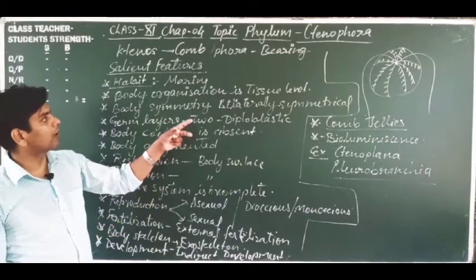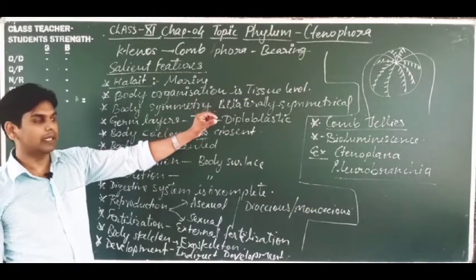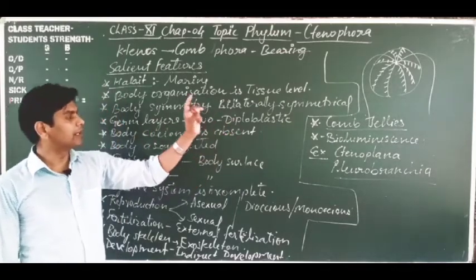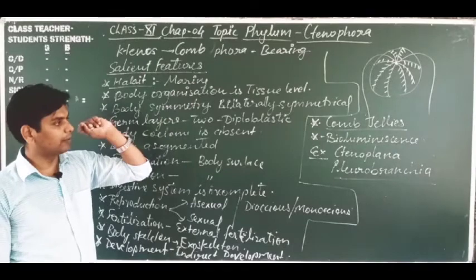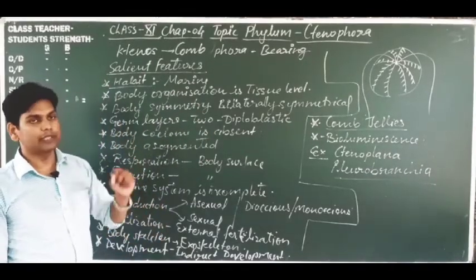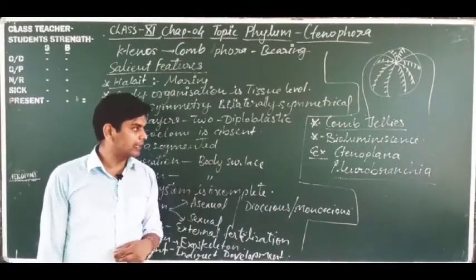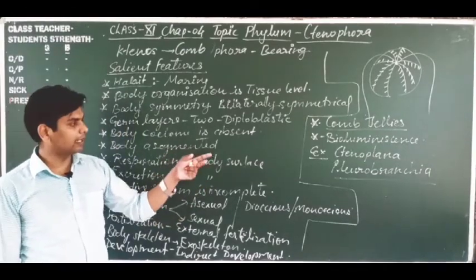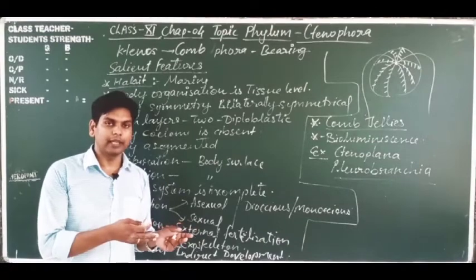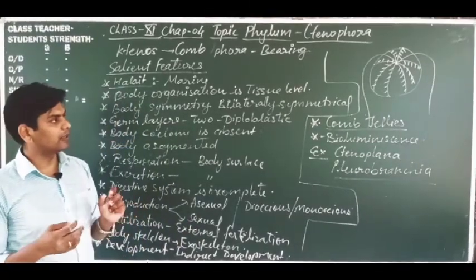Key points to remember: comb-like comb plates are present; eight comb plates are formed. The common name 'comb jellies' belongs to Phylum Ctenophora. Bioluminescence occurs in animals of Phylum Ctenophora. Examples are Ctenoplana and Pleurobrachia — these names may appear in exam questions asking which phylum they belong to.